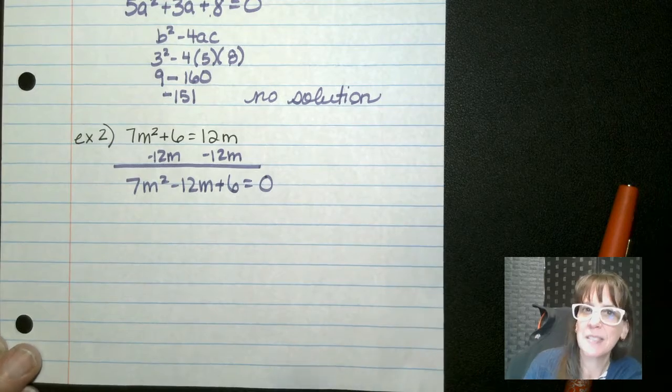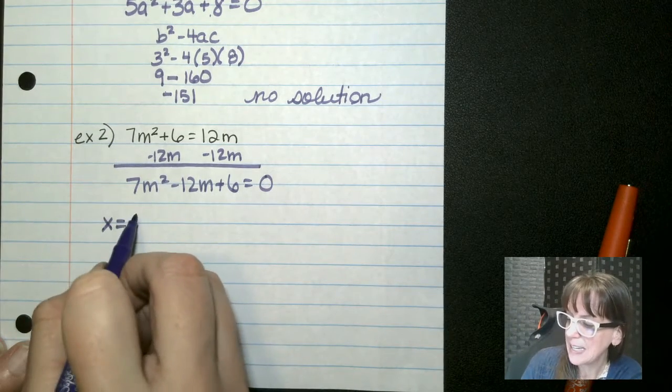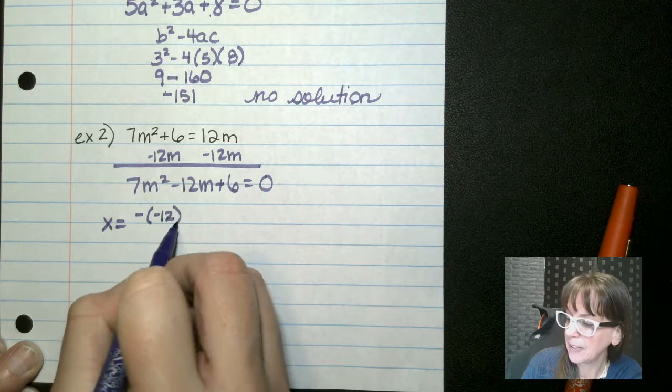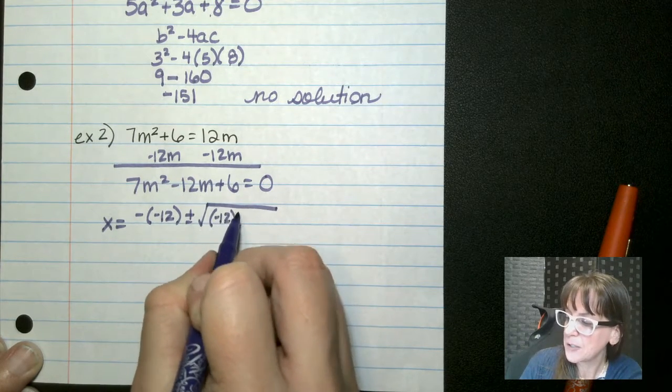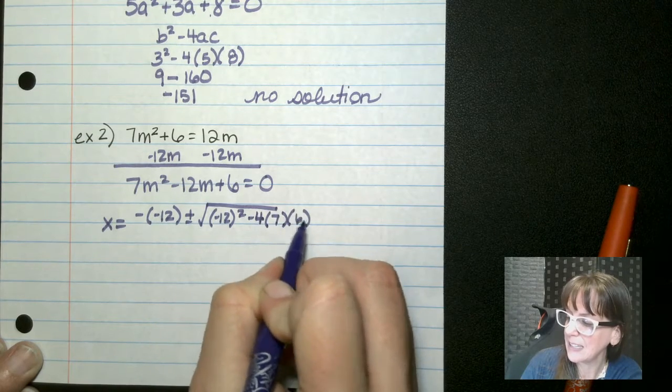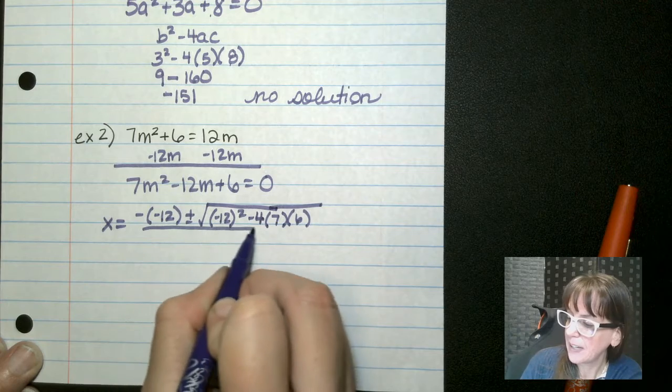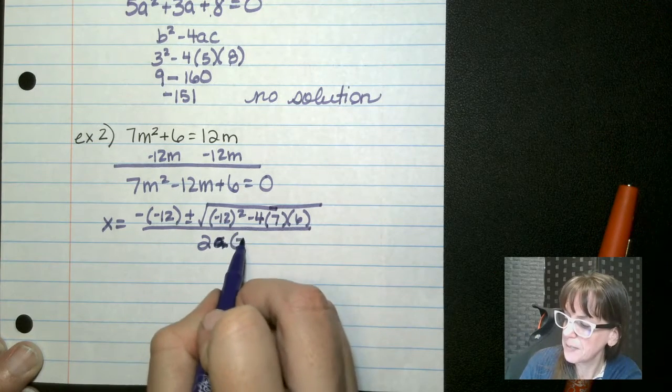So let's say that instead of doing the discriminant first, you're going to say x equals negative b plus minus the square root of b squared minus 4 times a times c, all divided by 2a. And our a is 7, so 2 times 7.